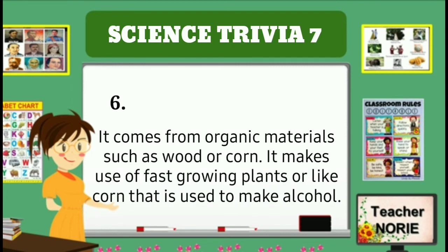It comes from organic materials such as wood or corn. It makes use of fast-growing plants or corn that is used to make alcohol.